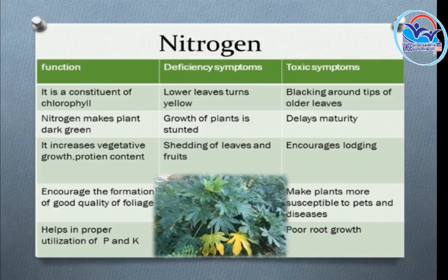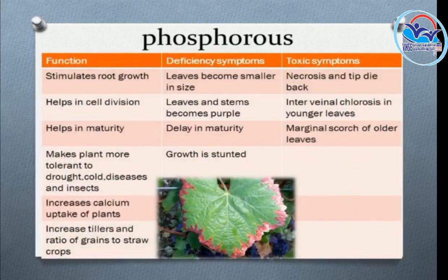Nitrogen deficiency delays maturity, encourages lodging, and makes the plant more susceptible to disease. It also affects cell division and makes plants more susceptible to drought, cold, disease, and insects.